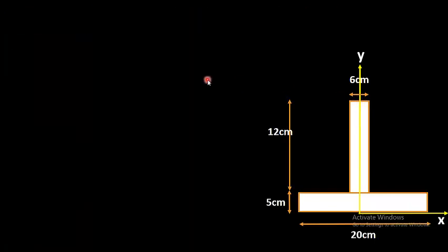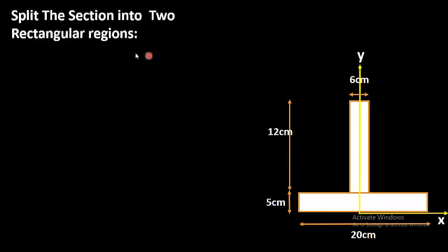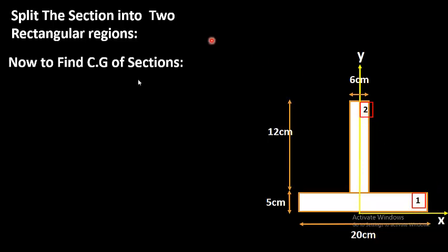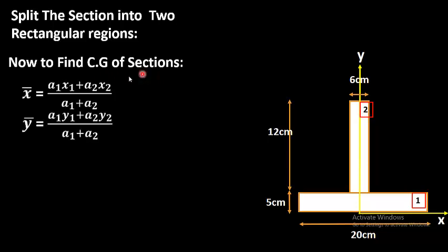This is the step-by-step process. Please watch the complete video and don't miss a single step to get a better understanding of the topic. First of all, we will split the section into two rectangular regions — region number 1 and region number 2. The second step is to find the center of gravity of the sections. We will be using the x-bar and y-bar formulas to locate the centroid of the whole figure.